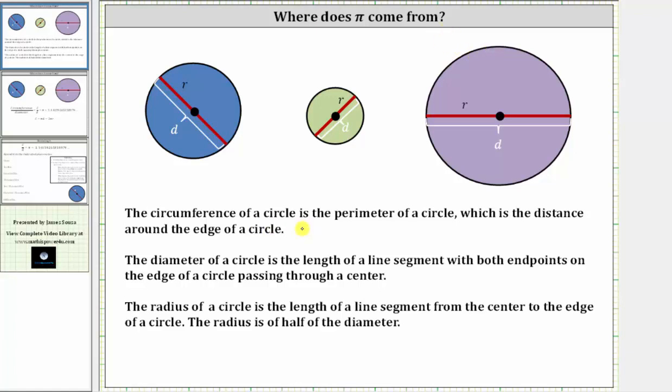The circumference of a circle is the perimeter of a circle, which is the distance around the edge of a circle.